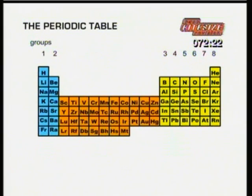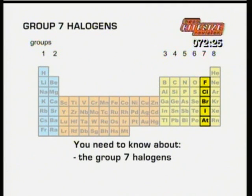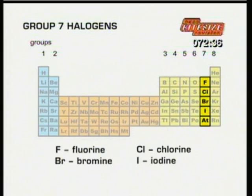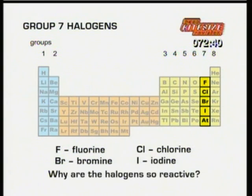The next group you need to know about is group 7, the halogens. The group 7 halogens is another group of highly reactive elements near the other end of the periodic table. The most common ones are fluorine, chlorine, bromine and iodine. Watch the next clip and see if you can work out why these halogens are so reactive.